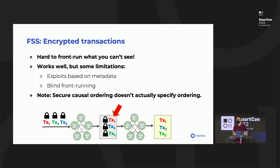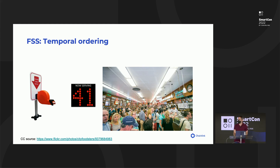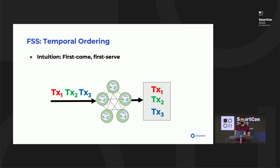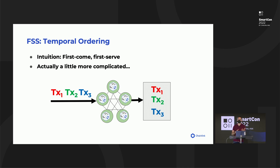That's approach number one. Approach number two is an idea that we call temporal ordering, and the intuition here is very simple. I like to call this the deli model of transaction ordering — we will order transactions on a first-come, first-served basis, the way that customers are served in a deli. You take a ticket, and according to the number on your ticket, you are served while you're waiting in line. It turns out that things are actually a little bit more complicated — in fact, quite complicated — but I want to give you a taste of exactly why they're complicated, so you can appreciate the research and engineering challenges behind FSS.